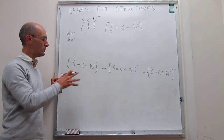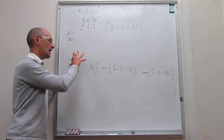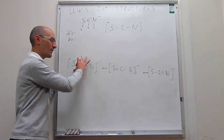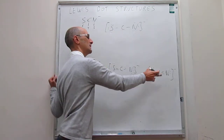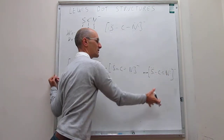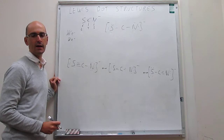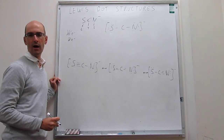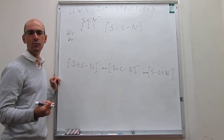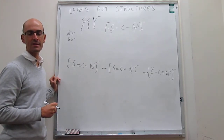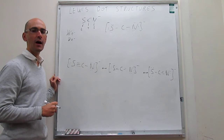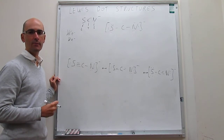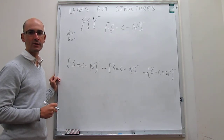So what we're going to do is calculate the formal charges for each one of the atoms in these three structures, and then we'll see how we can determine which one of the structures is the most likely by thinking about those formal charges.